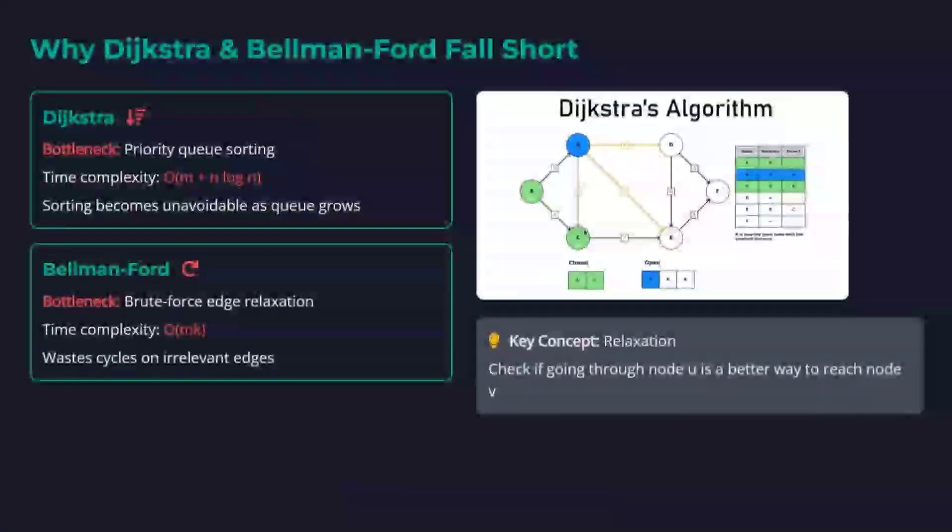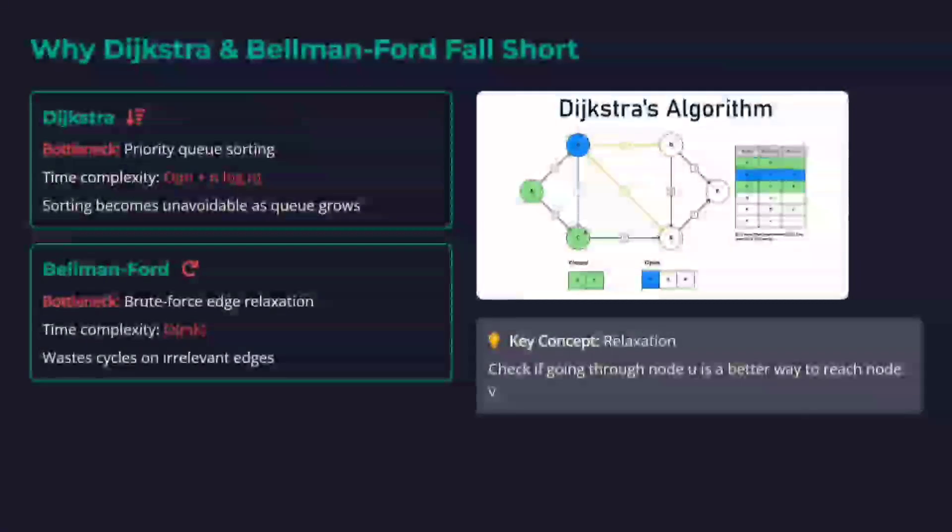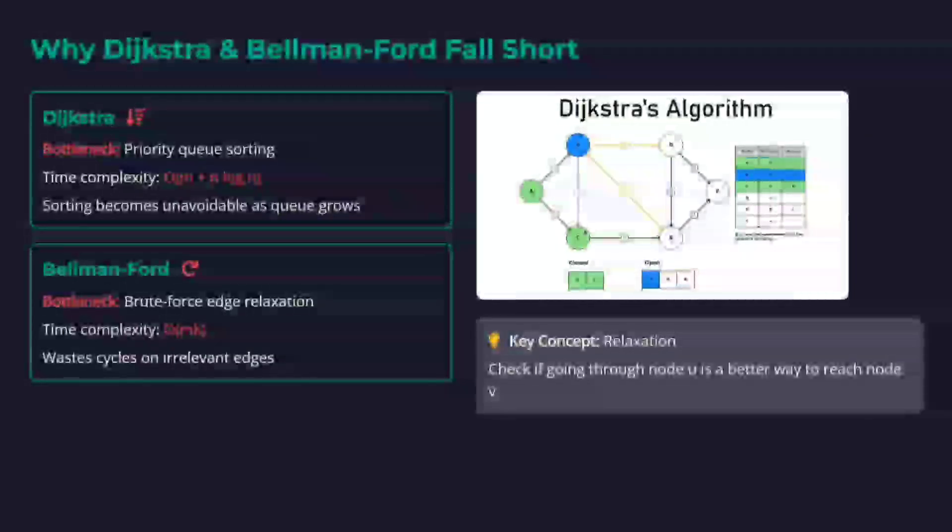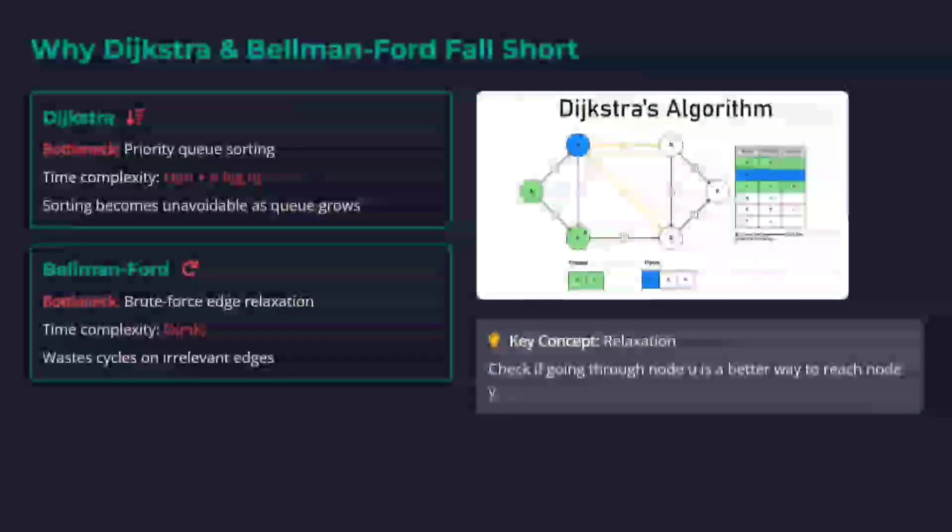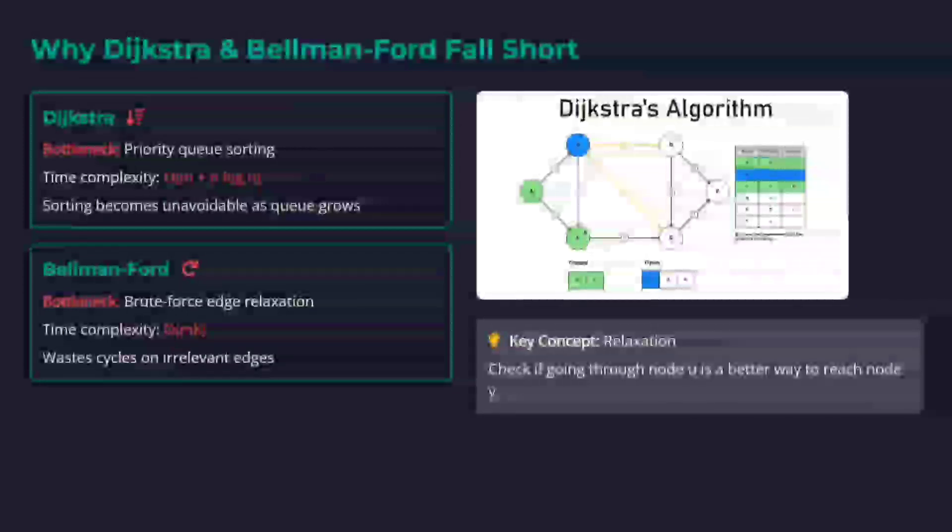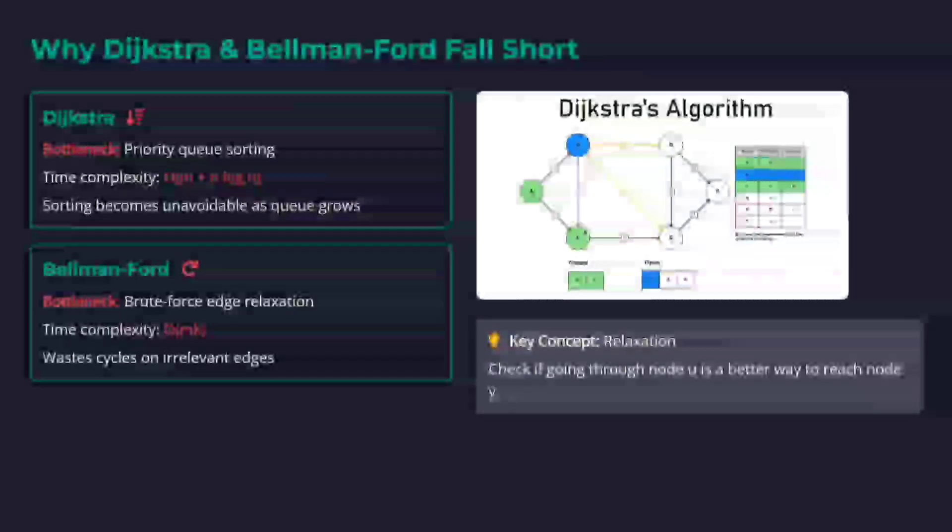First, what are the problems with Dijkstra and Bellman-Ford algorithms? The time complexity for Dijkstra is m plus n log n because there is a queue sorting that happens at every edge. I'm not jumping into the Dijkstra and Bellman-Ford algorithms in detail, else the video would go on for hours. With Bellman-Ford it is mk. Both waste a lot of resources, and that's why a new concept has been introduced which uses a hybrid version of both.